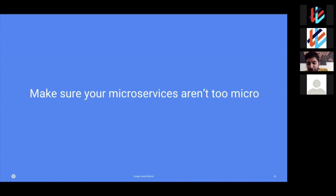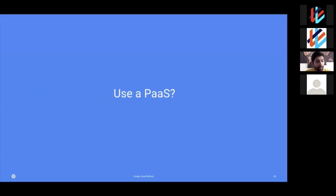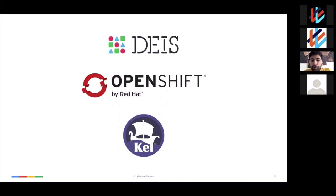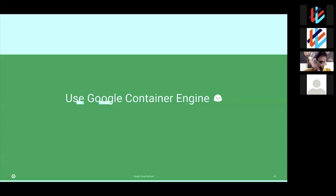Make sure your microservices aren't too micro. People get very excited about microservices and turn every single function into its own service — that's probably overkill. You want to break your application into logical components that make sense, not too small or too big. Finally, consider whether you want to use a PaaS — platform as a service. Maybe Kubernetes is just too low level with too many knobs. There are PaaS options built on top of Kubernetes like Deis, OpenShift, Kel, and many more. You can always go down to lower Kubernetes levels when needed, but nine out of ten times application developers just want a PaaS that lets them deploy their code easily.